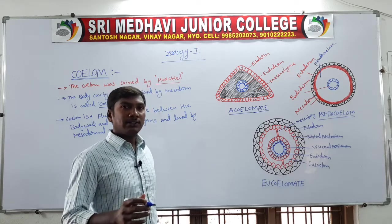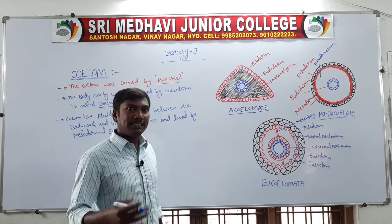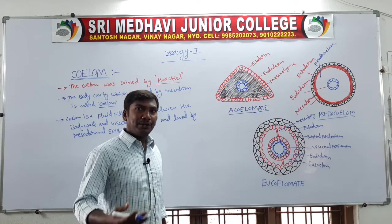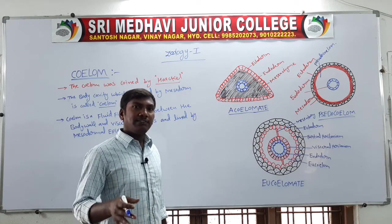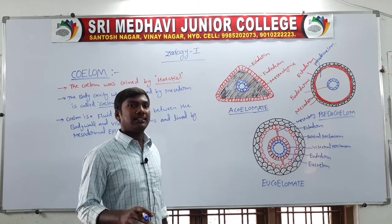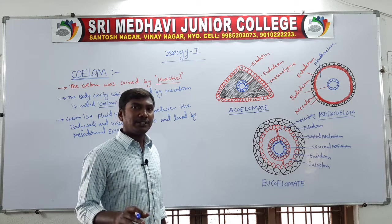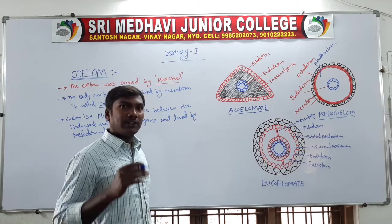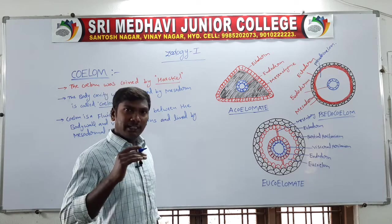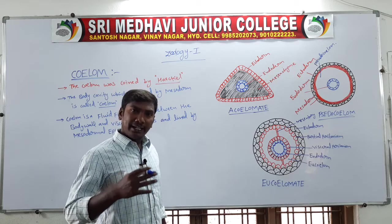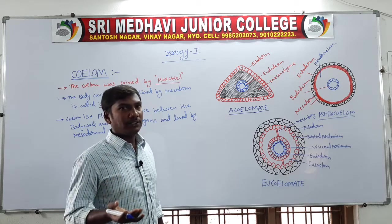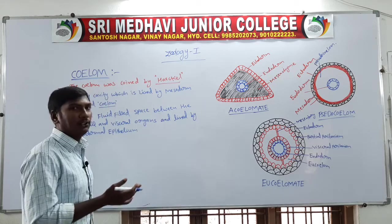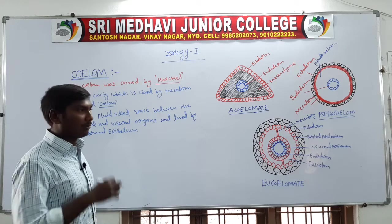The next one is triploblastic animals. Triploblastic animals, in the embryonic stage, have formation of three germ layers: outer ectoderm, middle mesoderm, and inner endoderm. Today's topic is the coelom.